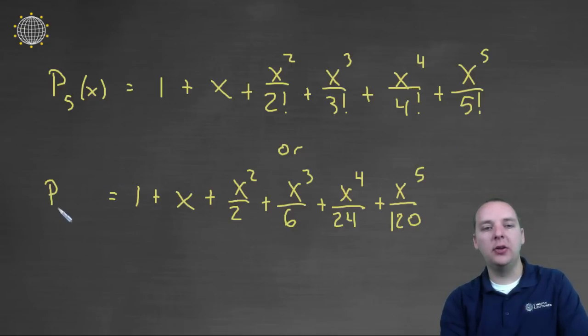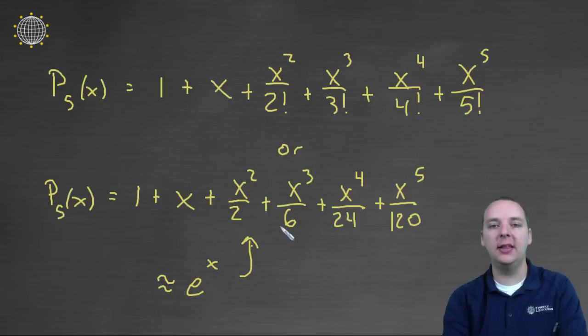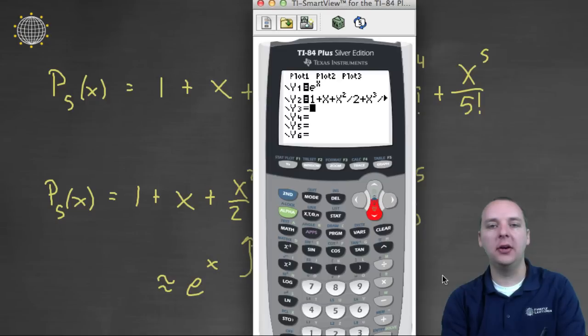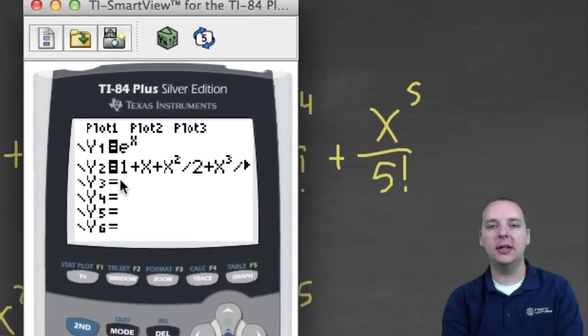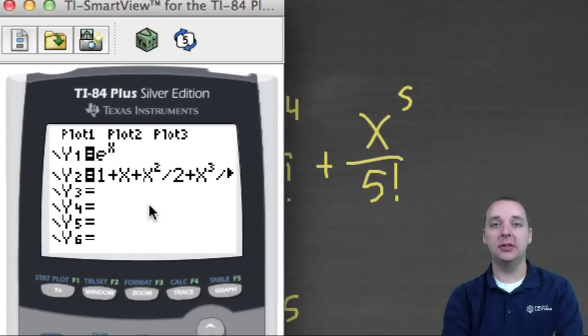So this is a polynomial of degree five, no doubt, but I think you'll be most impressed by seeing on a graph how he approximates e to the x. This guy looks almost like e to the x, it's pretty amazing. So let's open up our calculator here, I went ahead and took the liberty of typing in e to the x and the polynomial just to save us a little bit of time.